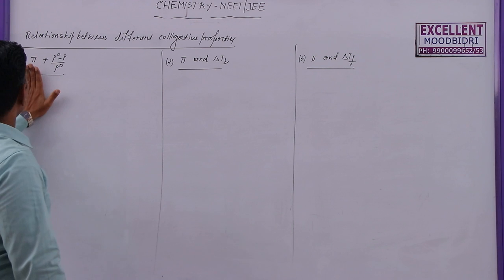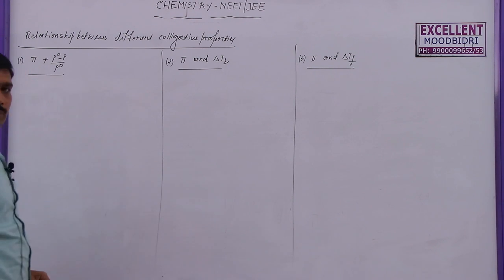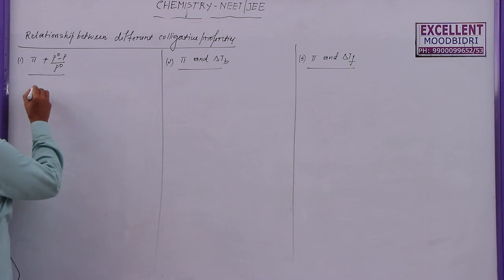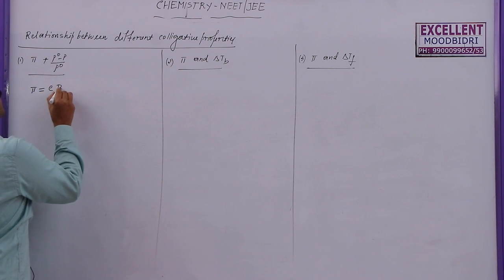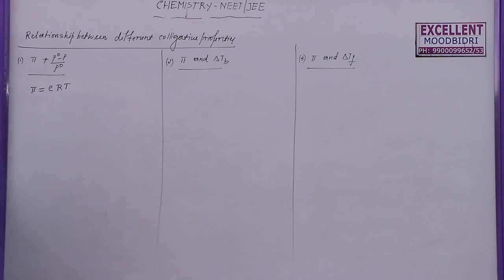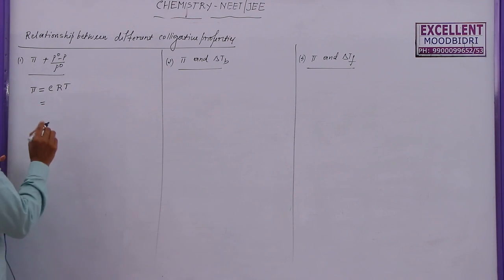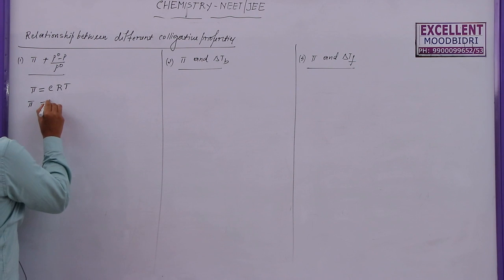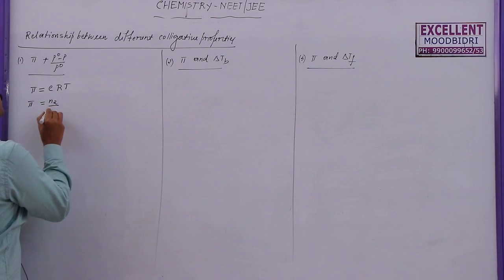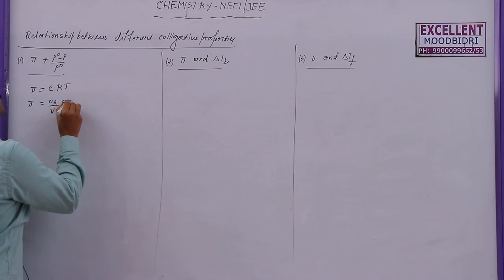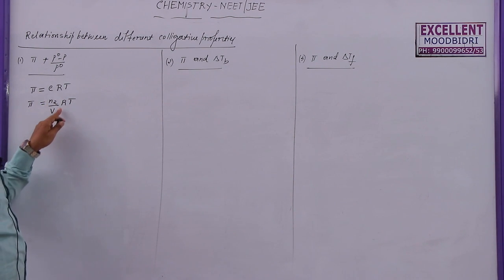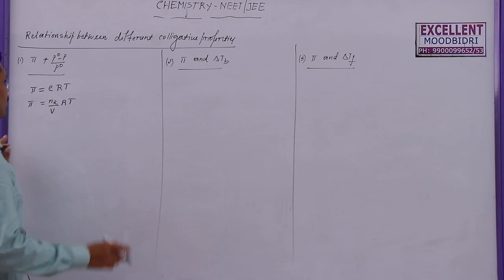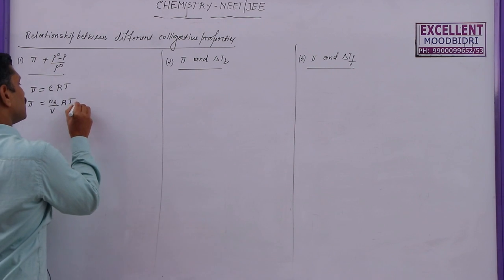First, the relation between osmotic pressure and relative lowering of vapour pressure. We know that π is equal to C·R·T — this is the formula for osmotic pressure. Or we can write π is equal to n₂/V · R·T, because concentration is the number of moles of solute divided by volume of solution. This is taken as equation 1.